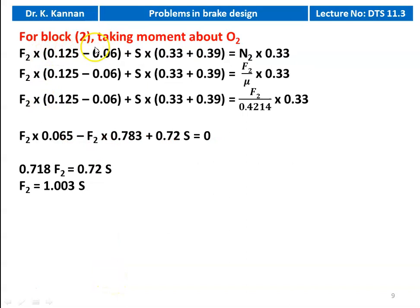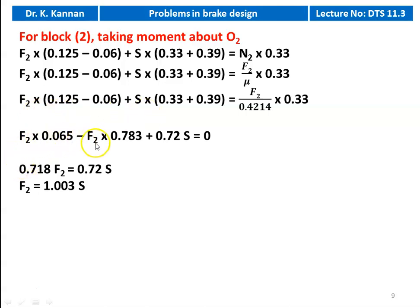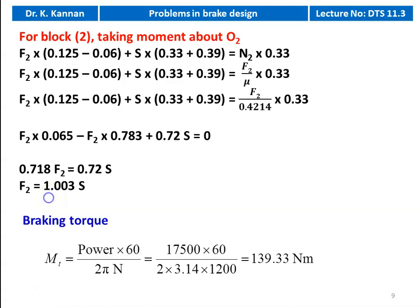Similarly, for block 2, taking the moment about fulcrum O2: F2 × (0.125 − 0.06) + S × (0.33 + 0.39) = N2 × 0.33. Substituting N2 = F2 / μ' and simplifying: F2 × 0.065 − F2 × 0.783 + 0.72S = 0. Therefore 0.718 × F2 = 0.72 × S, giving F2 = 1.003 × S.